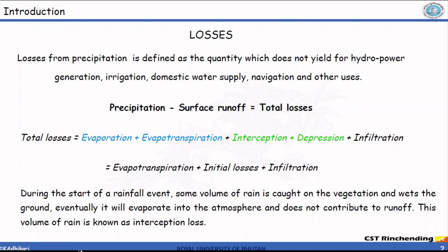This loss is known as depression losses. Infiltration is the process by which water gets into the ground. In this chapter we shall quantify or measure various losses such as evaporation, evapotranspiration, initial losses, and infiltration losses. Depression and interception losses are sometimes referred to as initial losses because they happen during the initial phase of precipitation.